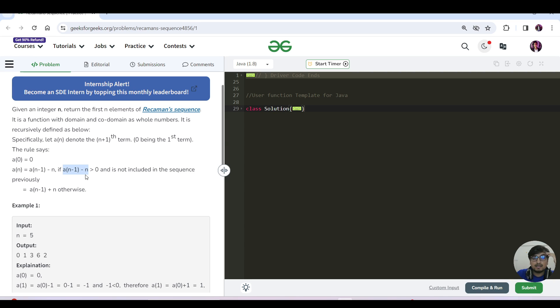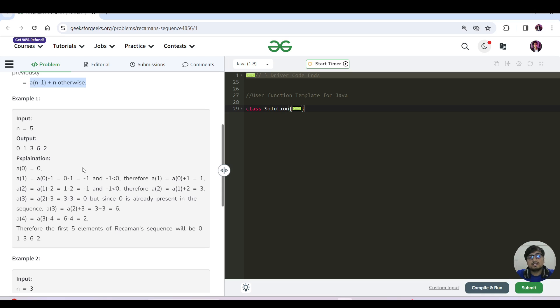If it is not satisfied, then what you will do is a[n] = a[n-1] + n instead.